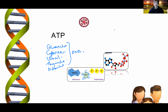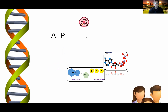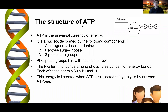Not to be confused, of course, with the ATP circuit in tennis. ATP is the universal currency of energy in every single cell. It's a nucleotide formed by a nitrogenous base, pentose sugar, and phosphate groups. The bonding between phosphate groups acts as high energy bonds, and every bond that's broken releases a huge amount of energy — which is how cells create and use energy in cell processes.